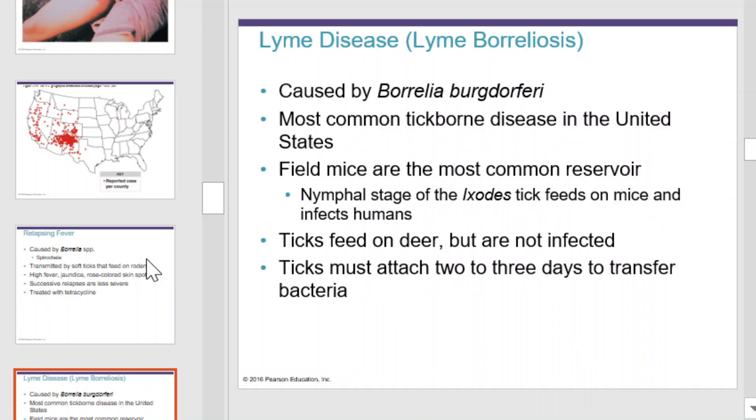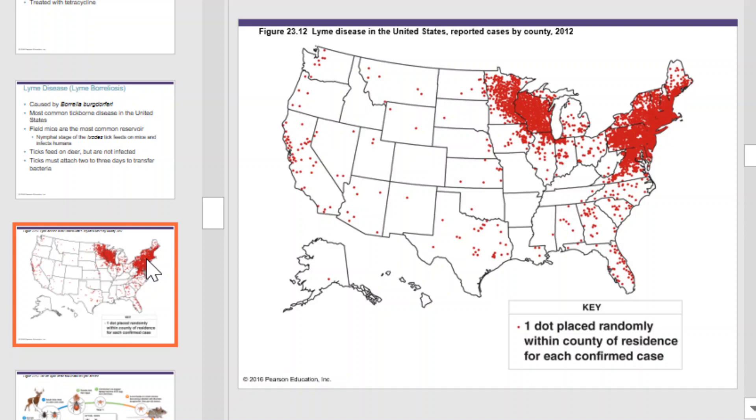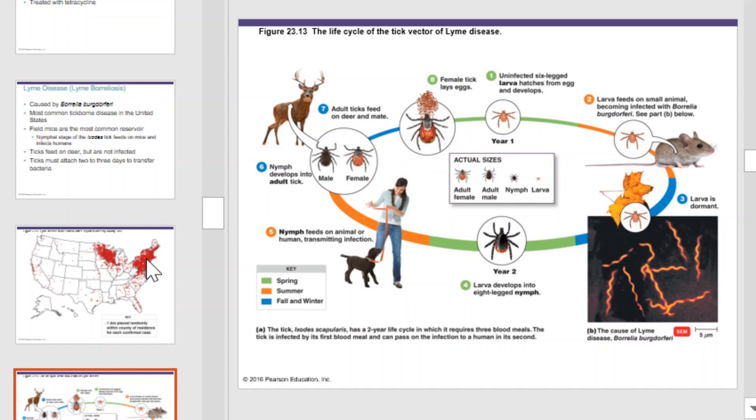Lyme disease, or Lyme borreliosis, is caused by Borrelia and is the most common tick-borne disease in the United States. Field mice are the most common reservoir for Lyme disease. The nymphal stage of the Ixodes tick feeds on mice and infects humans. The ticks also feed on deer, but the deer are not infected. The ticks must attach two to three days to transfer the bacteria. This map indicates where it is common, and this graphic indicates the life cycle of the organism, from tick to human to deer.